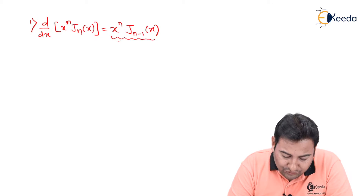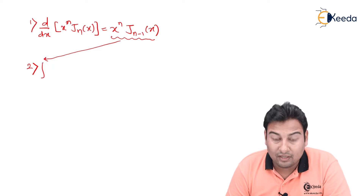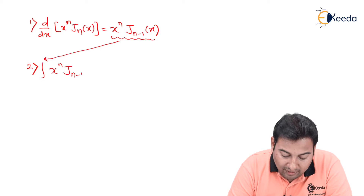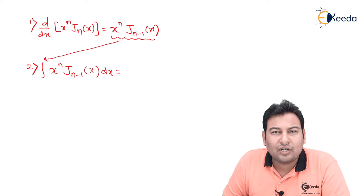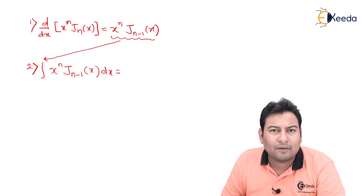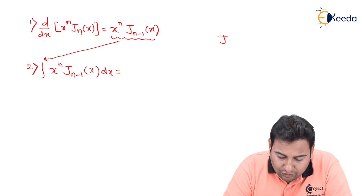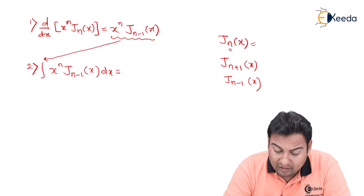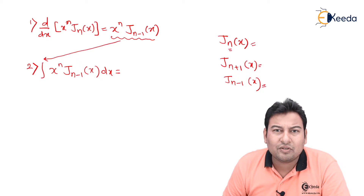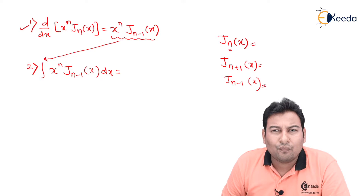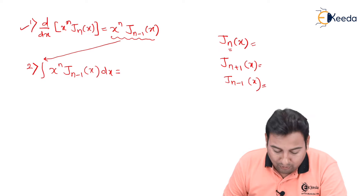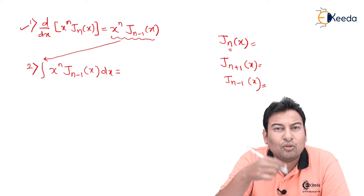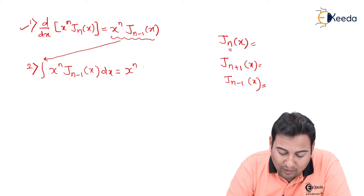The second formula is the integral: ∫ x^n · J_{n−1}(x) dx = x^n · J_n(x). Integration increases the power. Here is the trick to remember: J_n(x) is the present, J_{n+1} is the future, and J_{n−1} is the past. So the first formula (derivative) takes the Bessel function to the past, while the second formula (integration) takes it to the future.